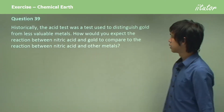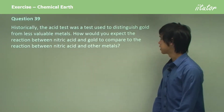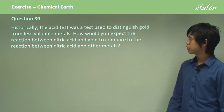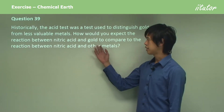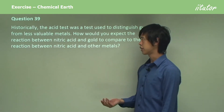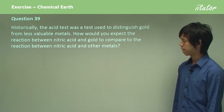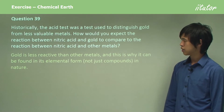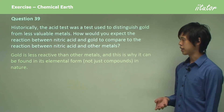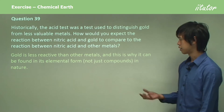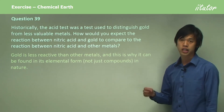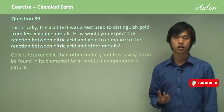Historically the acid test was a test used to distinguish gold from less valuable metals. How would you expect the reaction between nitric acid and gold to compare to the reaction between nitric acid and other metals? Gold is less reactive than other metals, and this is why it can be found in its elemental form — not just as compounds in nature. So we can find gold as pure gold in nature.